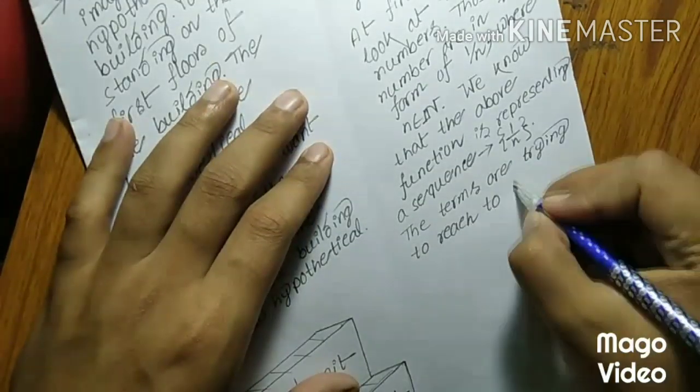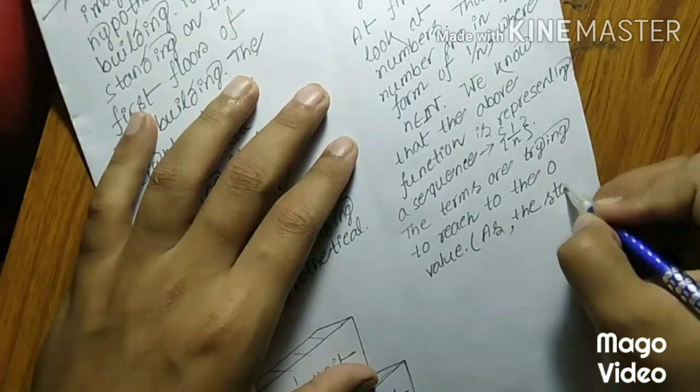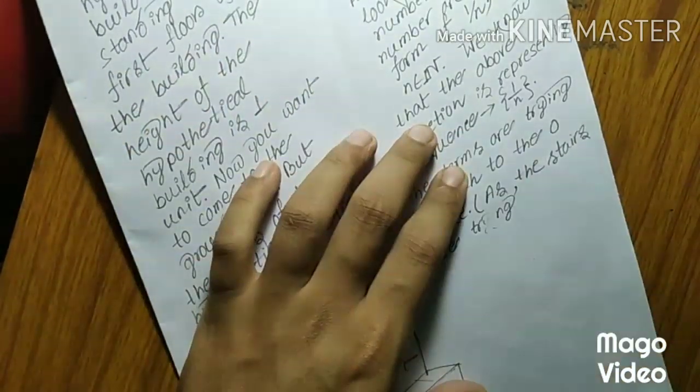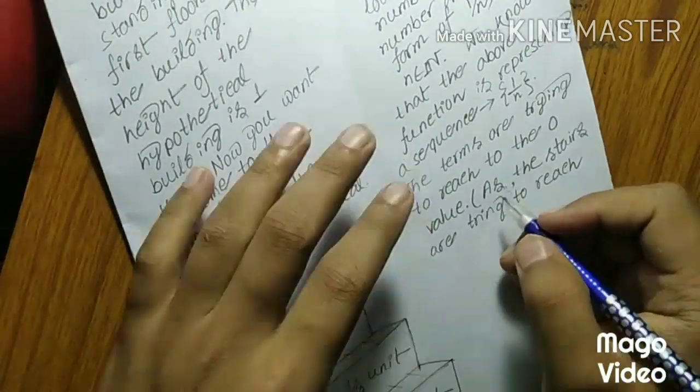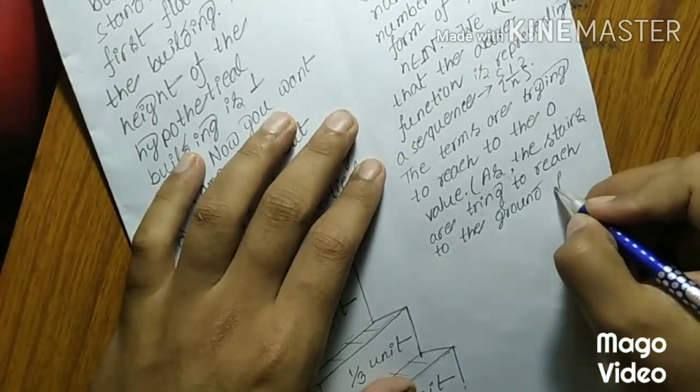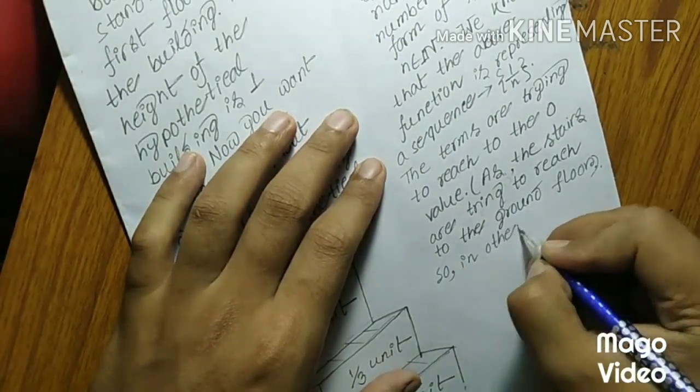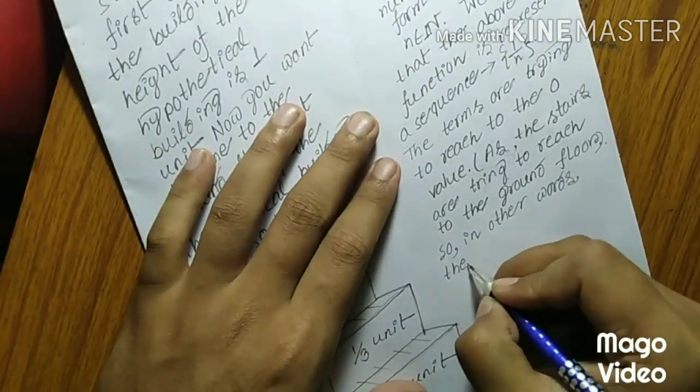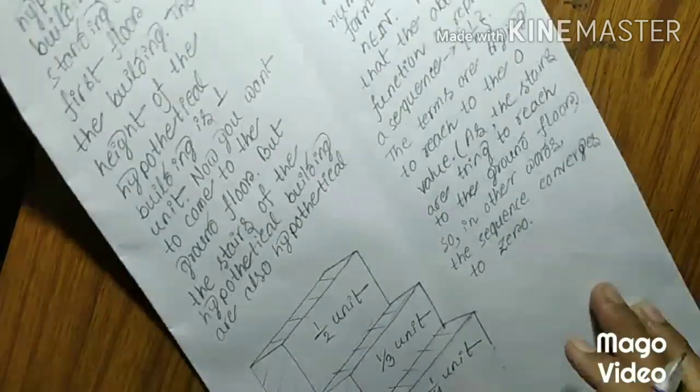The terms are trying to reach to the 0 value as the stairs are trying to reach to the ground floor. So, in other words, the sequence converges to 0.